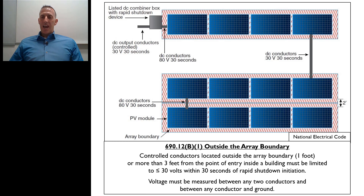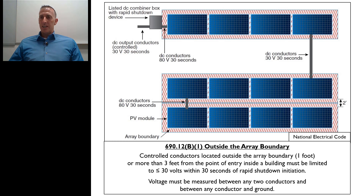Keep in mind: anything outside that array boundary — that one-foot boundary — or more than three feet inside the point of entry into the building, all of those conductors, when the rapid shutdown is initiated, must drop from whatever voltage they are down to 30 volts or less within 30 seconds. Similar to the 2014 code, voltage must be measured between any two conductors and ground. So the highest voltage between any of the conductors or any conductor and ground must be less than or equal to 30 volts within 30 seconds — every conductor has to meet that requirement. The maximum is 30 volts.